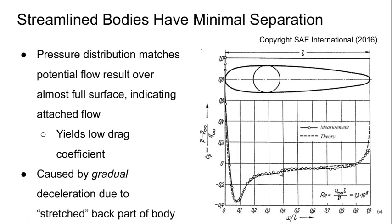The dots are measured pressure distribution and the dashed line is the theoretical one from potential flow. And we can see that they're almost perfectly matched up.